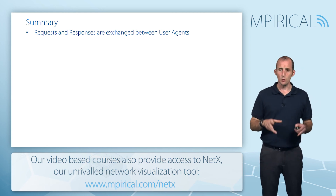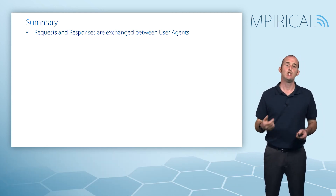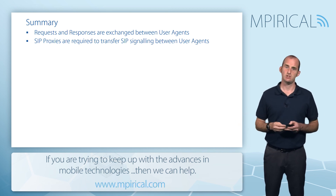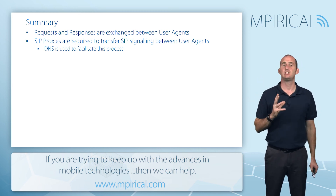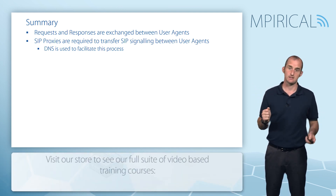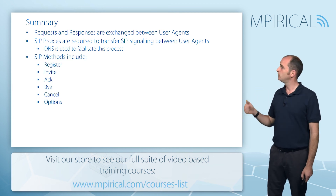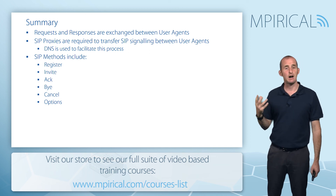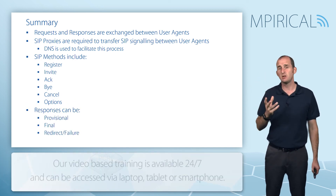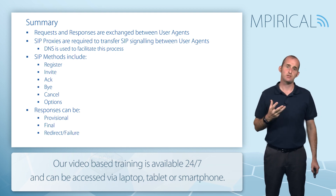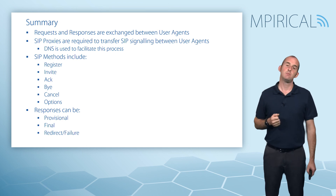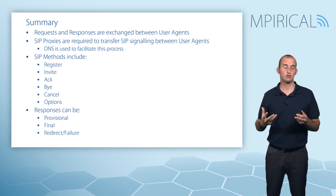In summary, requests and responses are exchanged between user agents and SIP proxies are often required to transfer SIP signaling between those user agents. DNS can be used to facilitate this process, particularly when routing SIP between two different SIP domains. The SIP methods discussed include REGISTER, INVITE, ACK, BYE, CANCEL, and OPTIONS. The response codes covered included provisional responses in the 100 series, final success responses in the 200 series, redirect responses in the 300 series, and failure messages in the 400, 500, and 600 series.